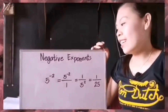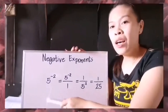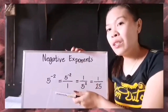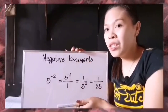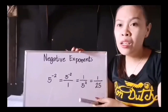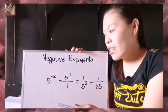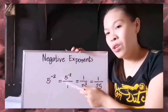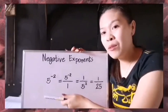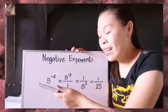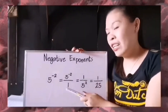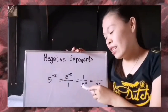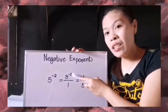Let's now have our first example on negative exponents. We have this main problem: 5 raised to negative 2. What do you think is our answer? The rule of negative exponents — if you have 5 raised to negative 2, it is just equal to 5 raised to negative 2 over 1, because it always has its imaginary denominator 1.